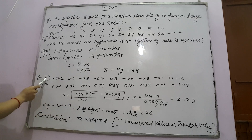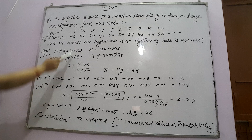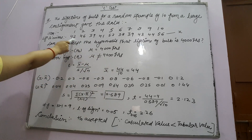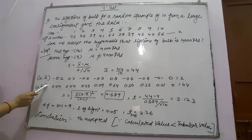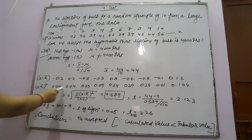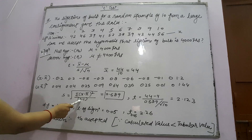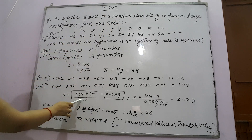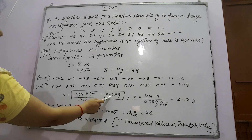We calculate X minus X̄ from here. X̄ is 4.4. For example, 4.2 minus 4.4 is −0.2, 4.6 minus 4.4 is 0.2, 3.9 minus 4.4, and so on. Then we take the whole square of each (X − X̄) value, and sum all (X − X̄)² values. The formula for standard deviation S is √[Σ(X − X̄)² / (N − 1)]. Number of observations is 10, so N − 1 = 9. After calculating, the standard deviation S = 0.589.